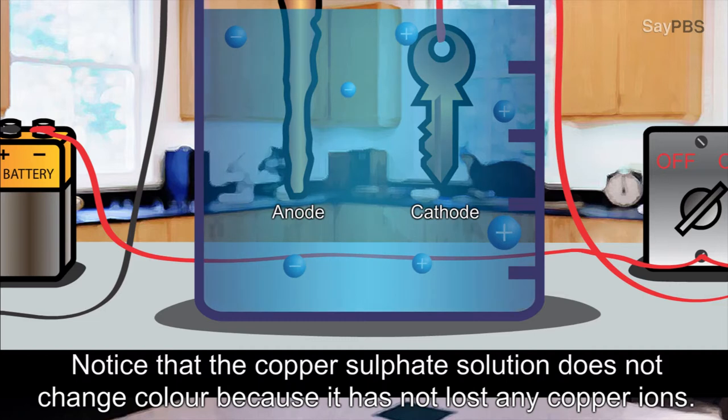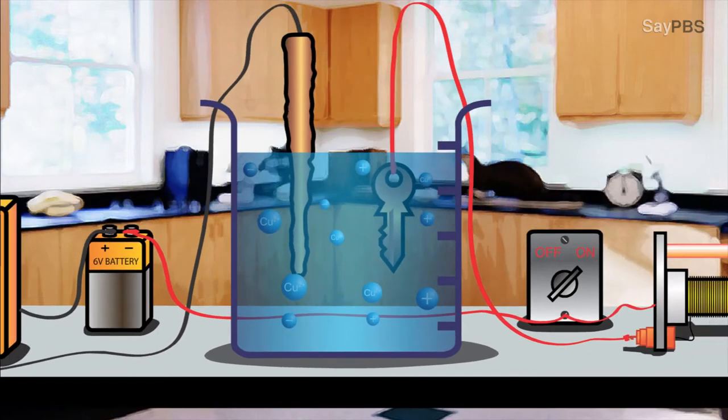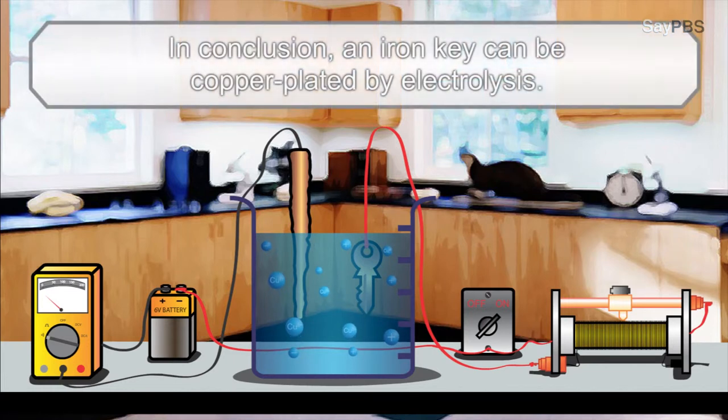Notice that the copper sulfate solution does not change color because it has not lost any copper ions. In conclusion, an iron key can be copper plated by electrolysis.